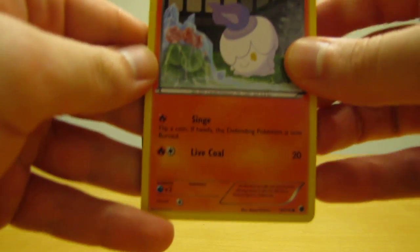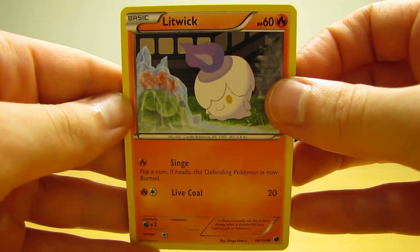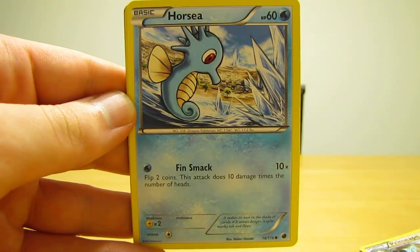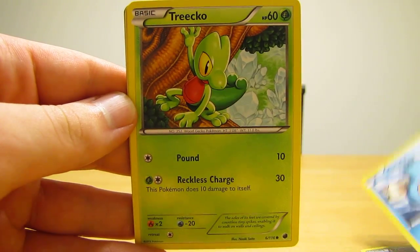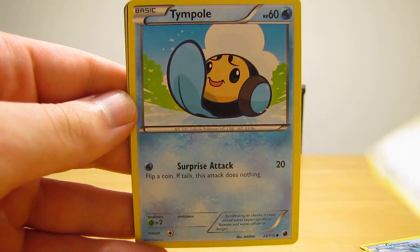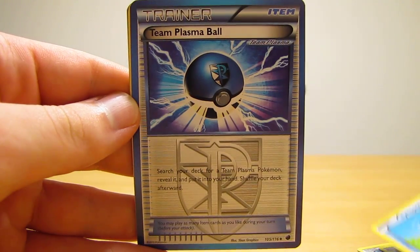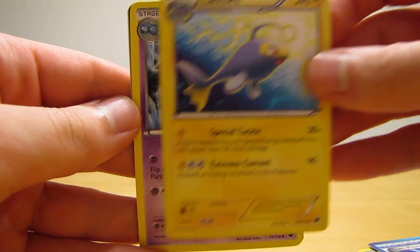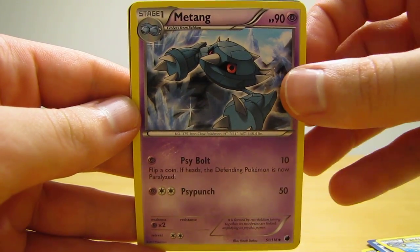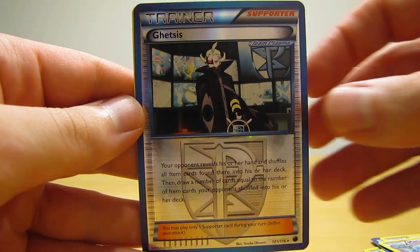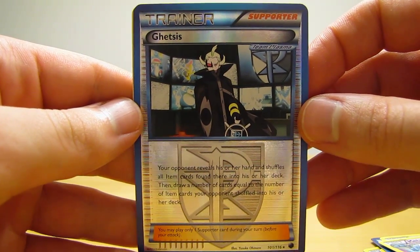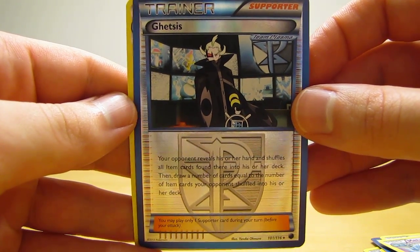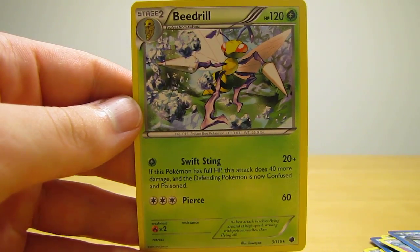Okay, so the first pack in this video starts off with Litwick, Primeape, Horsea, Trico, Timple, Team Plasma Ball, Lantern, Matang, Ghetsis. Is that a rare? Yes it is, it's a rare trainer card. And then the actual rare in the pack is a Beedrill.